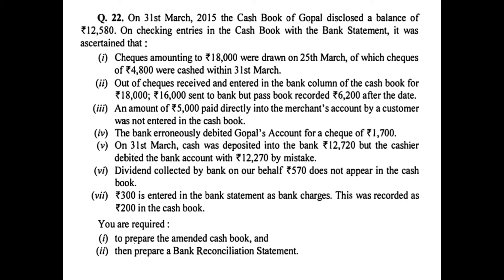Point three: an amount of 5,000 paid directly into the merchant's account by a customer was not entered in the cash book. This is a mistake in the cash book itself and must be rectified in the amended cash book. This 5,000 direct deposit by the customer will be put on the debit side of the amended cash book and will not be a part of the BRS.